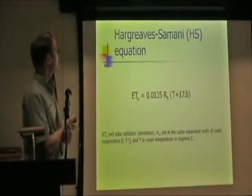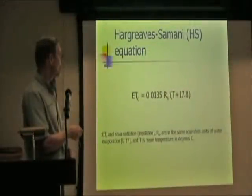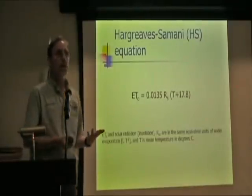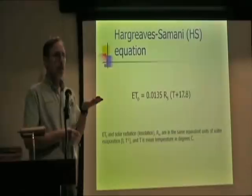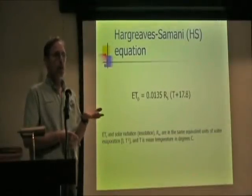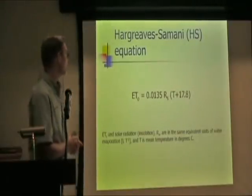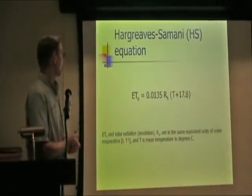And the third equation is the Hargreaves-Samani equation. It depends on solar radiation and air temperature as opposed to net radiation. What is net radiation? Net radiation is the balance, or I should say the sum, of the incoming short and long wave radiation minus the outgoing short and long wave radiation where the outgoing short wave would be reflected radiation.